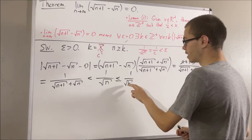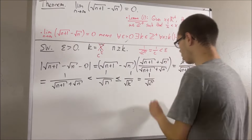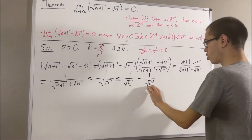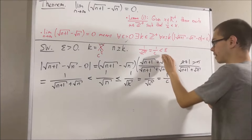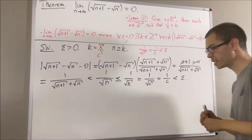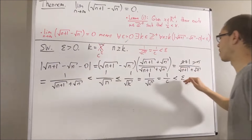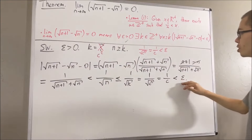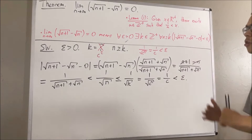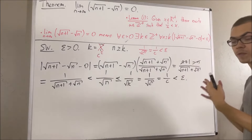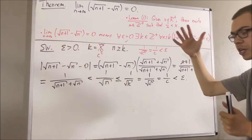If we do that, we can replace k with c squared. Square root of c squared is just equal to c, and 1 over c is less than epsilon. So as you can see, we have made this expression less than epsilon, which is what we want. We have an outline for what our proof is going to look like, so let's start writing up the proof.